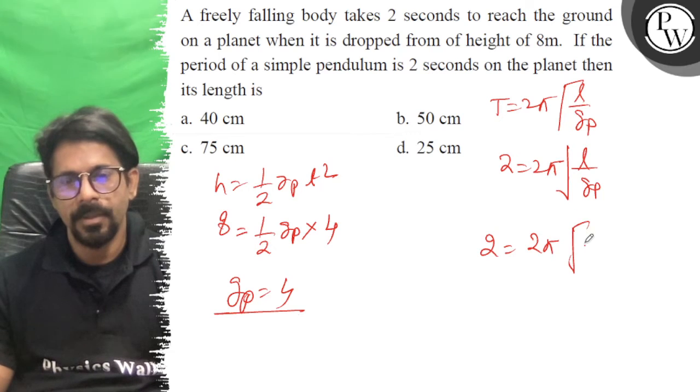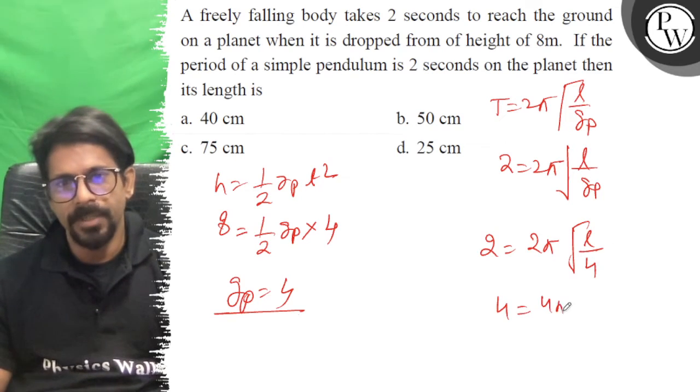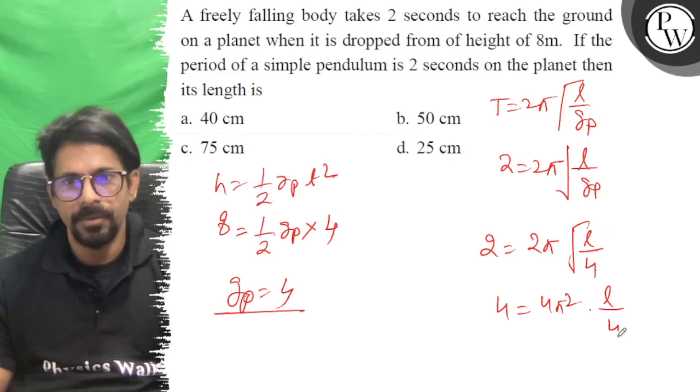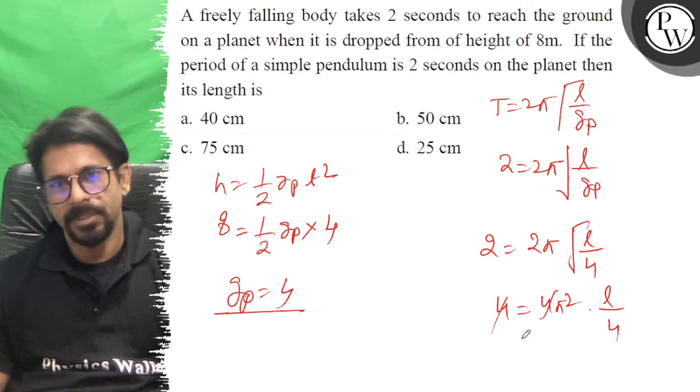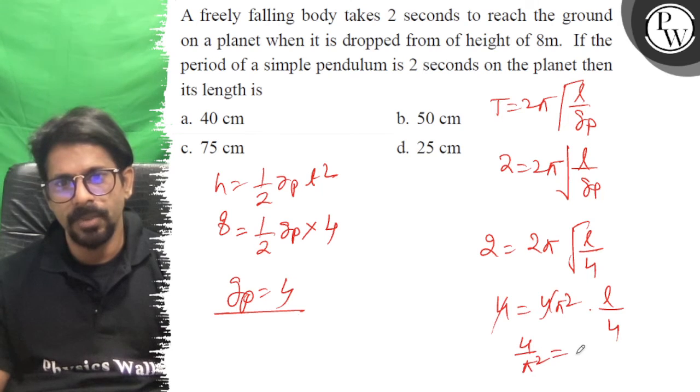So it's 2 equals 2π root of l by 4. This gives us 4 equals 4π² times l by 4. The 4s cancel, so 4 upon π² equals l.